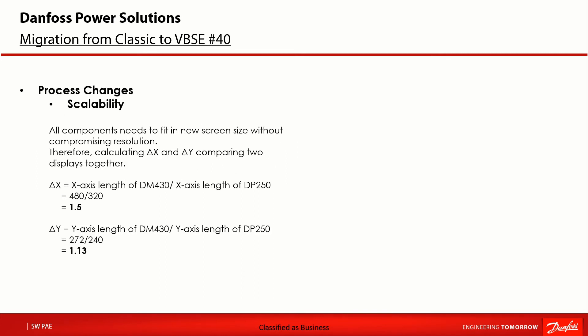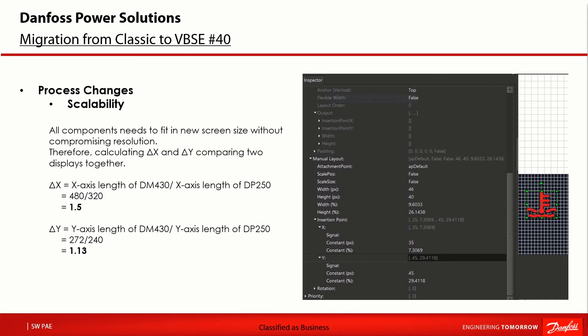Once finished creating the library of images and text, you can start adding components from the library to each screen. For each component in the screen you may need to recalculate the X and Y coordinates to place it at the correct position on the new display screen. In order to place image components of the DP250 to fit perfectly in the new display DM430, multiply delta X with the X coordinates of the image in DP250, and delta Y with the Y coordinates of the image in DP250, through the inspector window of the PLUS1 screen editor.